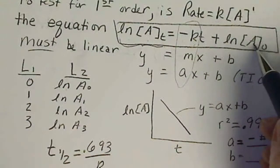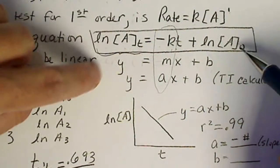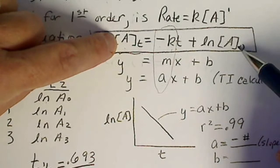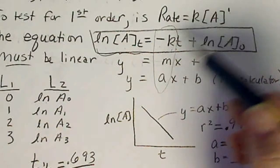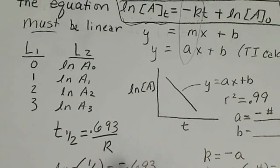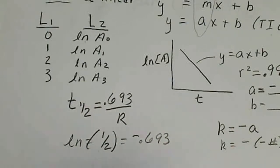So we can rearrange these equations when half of what we started with is remaining. That 0.693 really comes from the natural log of 1 half.